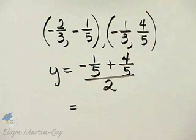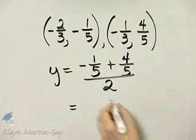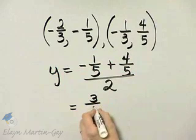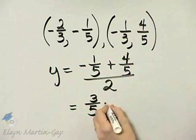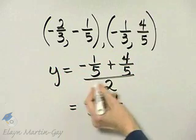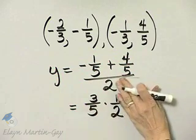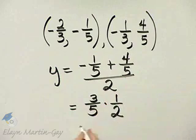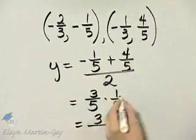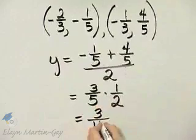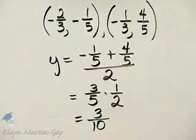So what is that? Negative 1 fifth plus 4 fifths, that's 3 fifths. Divided by 2 is the same as times 1 half, and that is 3, 3 times 1 is 3, over 5 times 2, which is 10.